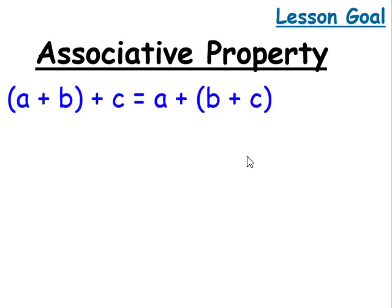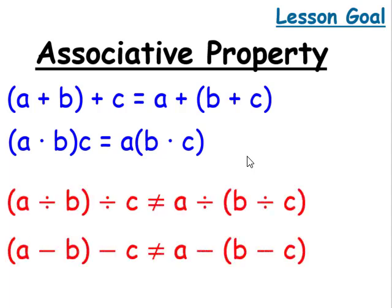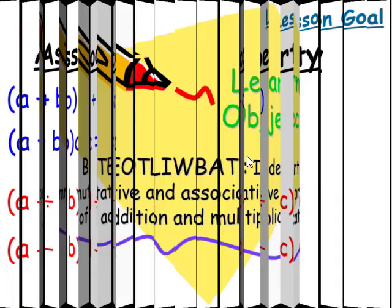Associative property. Instead of changing the order in which we multiply, we're going to just change the grouping by sliding the parentheses either to the right or to the left when we are adding or multiplying. This does not hold true when we are dividing and subtracting.